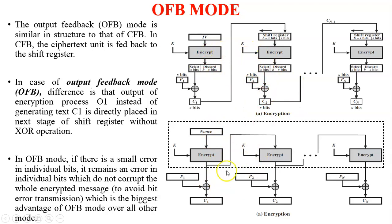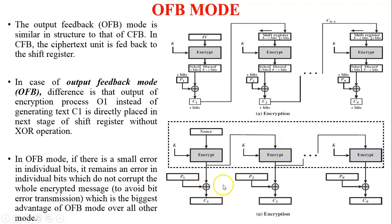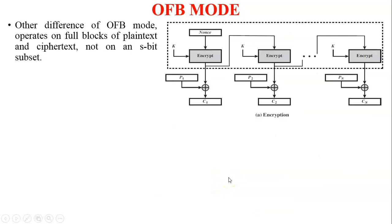In CFB mode, if there is any error in the ciphertext, that error propagates into the next step — C2 is corrupted, then C2's error propagates to the next step and C3 is corrupted. But in OFB mode, if there is any bit error in the output of the encryption algorithm, it will not be propagated. It is resolved at that point because C1 is generated correctly since the XOR process occurs separately afterward.